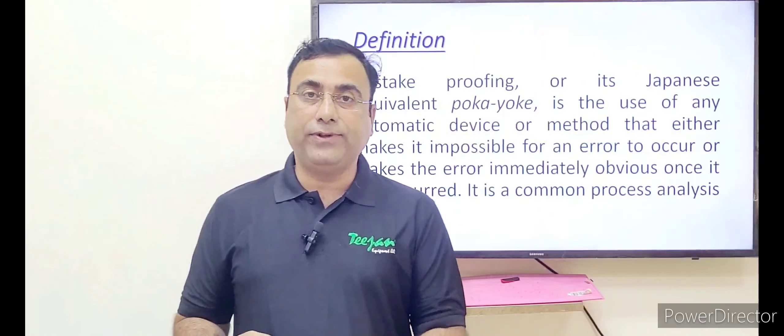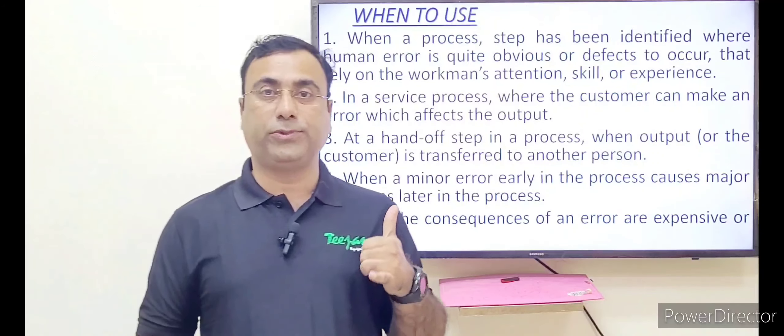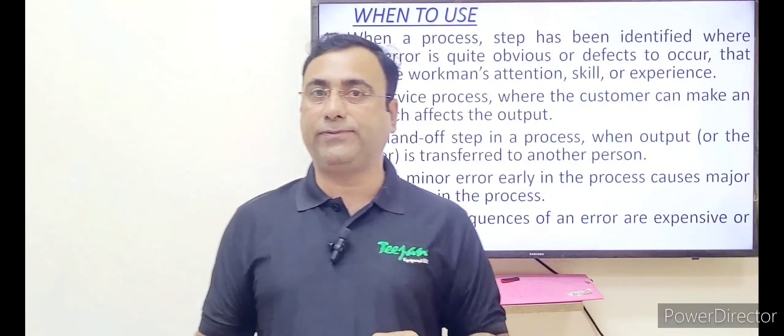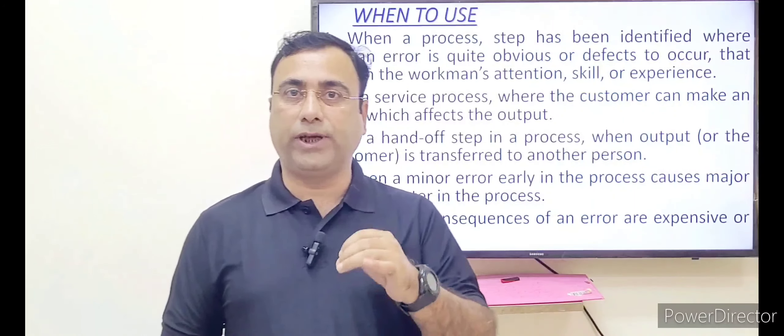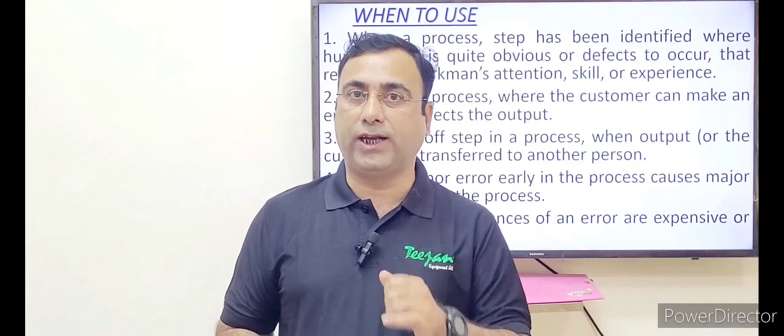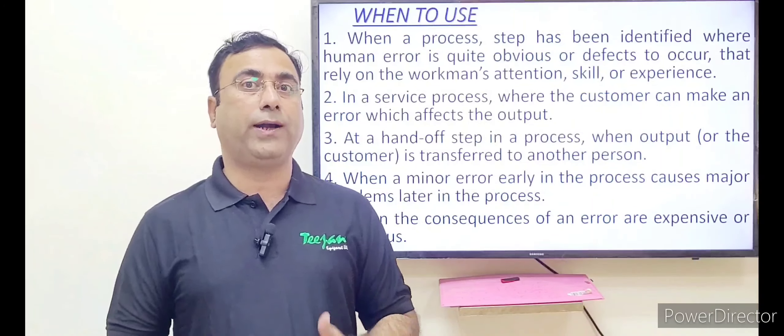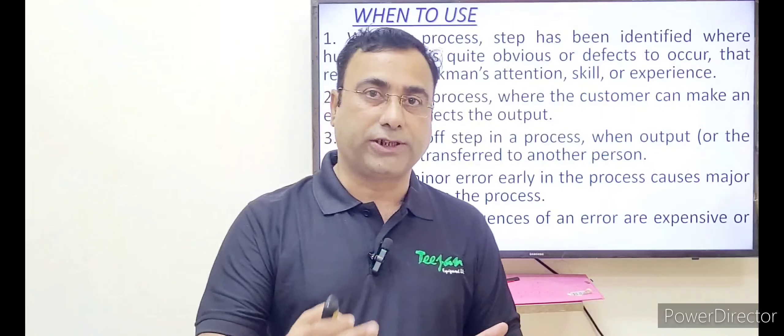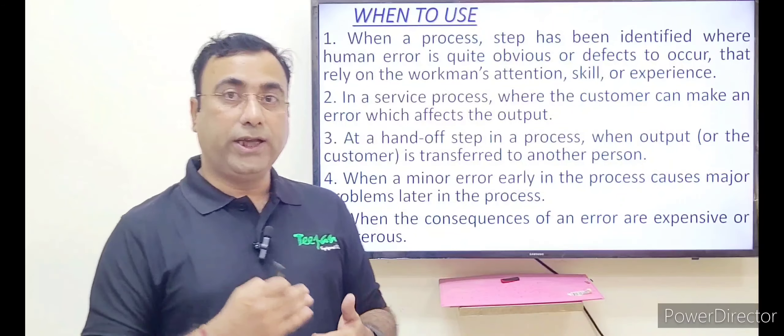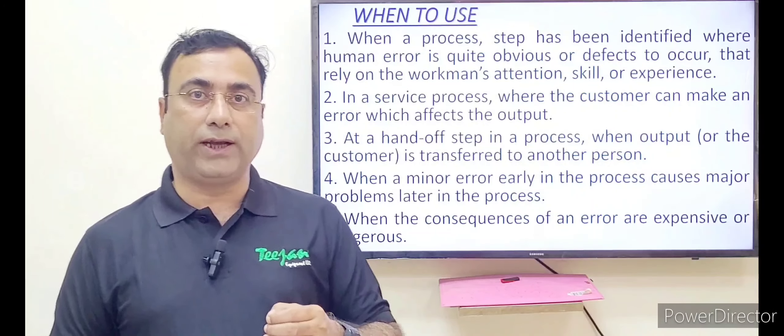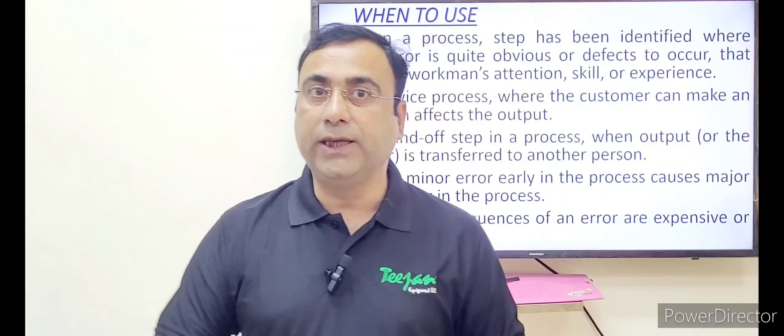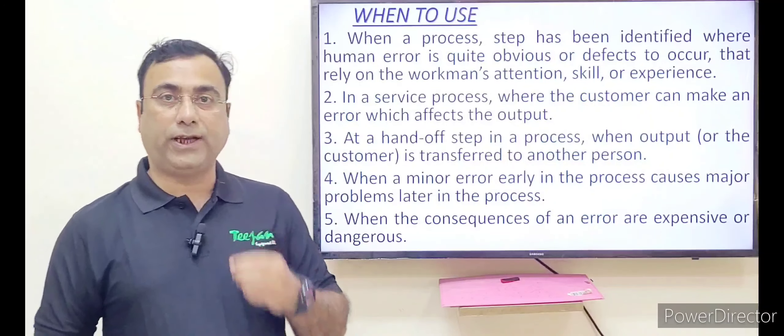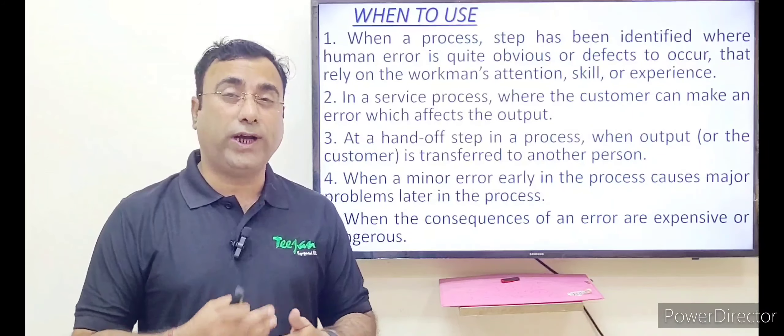There are five similar situations where we should use this mistake proofing system. The first one is if you have identified a location, a system, a place where human error is quite obvious. Second, when you are handing off or transferring the system to another person. Third one is if you understand that the minimum error that you have done initially may cause higher impact at the end. And the fourth one is if there is any error that is quite expensive.